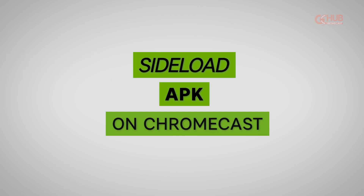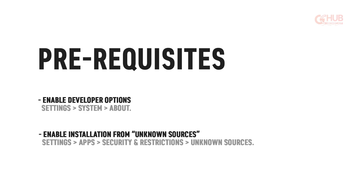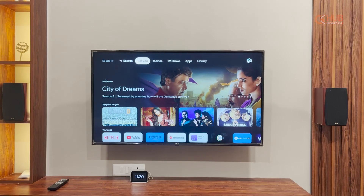This is Simran and in today's video we are going to show you how you can sideload an APK on Chromecast or Chromecast with Google TV. Here are some prerequisites you need to accomplish: first, you need to enable developer options, and second, enable installation from unknown sources. We'll do this later, but first let's install the apps.